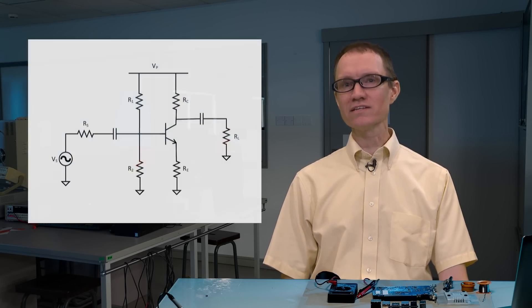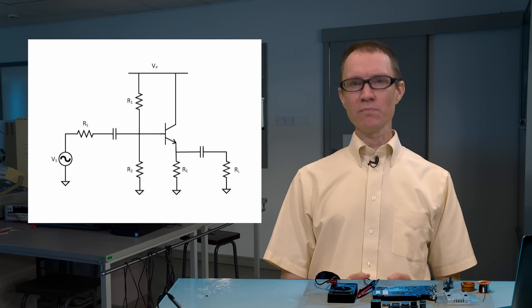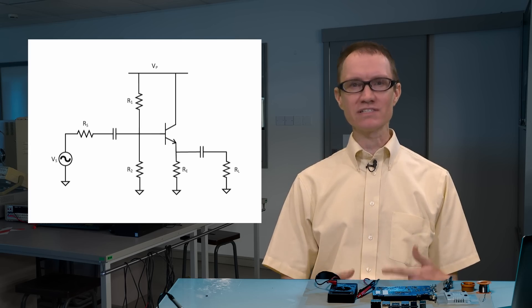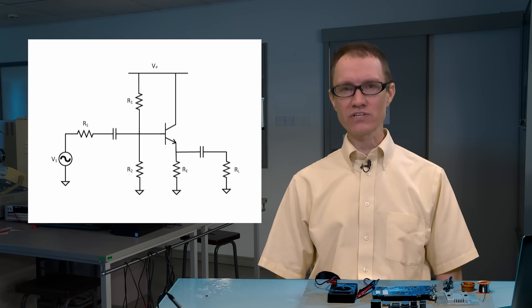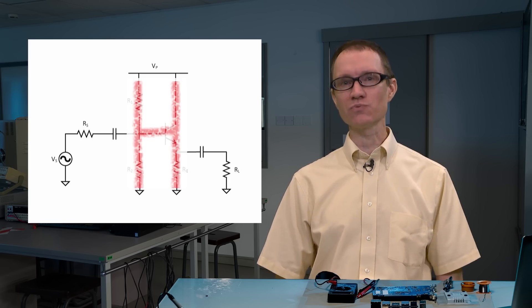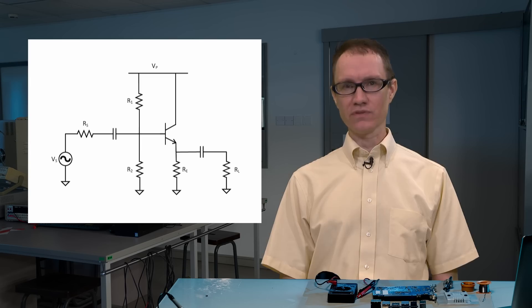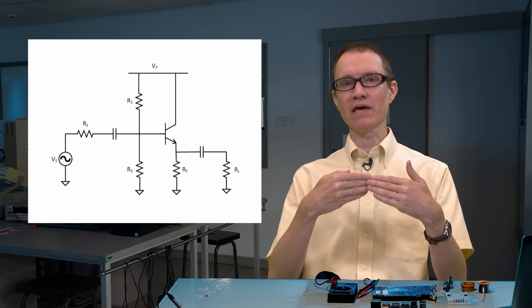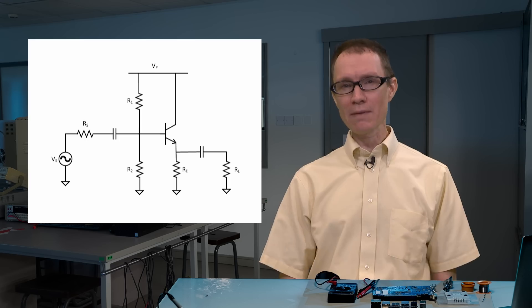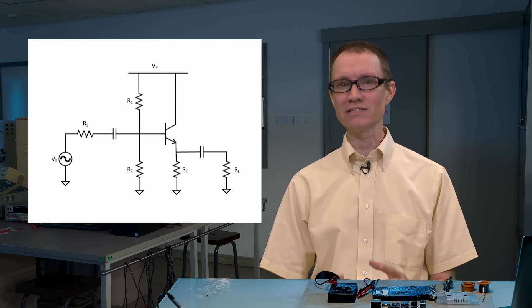When you consider basic transistor amplifiers, like this common emitter amplifier or this common collector amplifier, you might notice that one of the standard ways of establishing DC bias points is to use resistors. There's a kind of letter H shape that you notice with both of these configurations. The kind of bias points we want in a transistor is usually a high voltage at the collector, a medium voltage at the base, and a lower voltage at the emitter. With bipolar transistors, that ensures the transistor is properly biased in the forward-active mode.